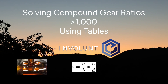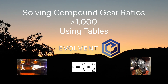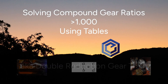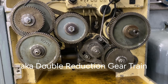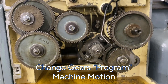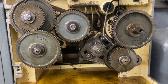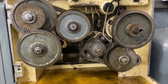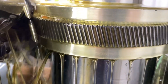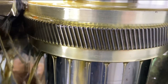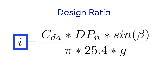Hey everybody, we're going to get into programming machines with change gears — it's how it was done before controllers. These gear reduction trains are used to control machine motion. You can use them to program a feed, a speed, a gear count, or a helical angle, which is the example we'll use. Here is one of the helical examples we're going to talk about.